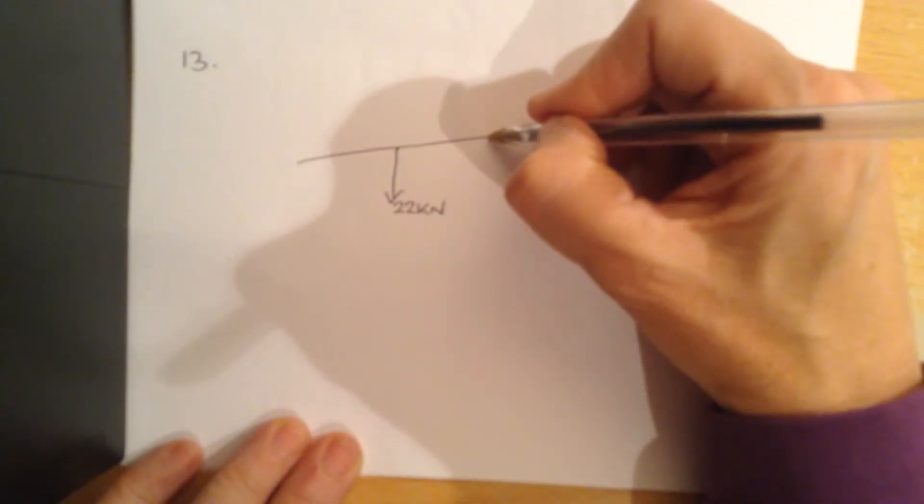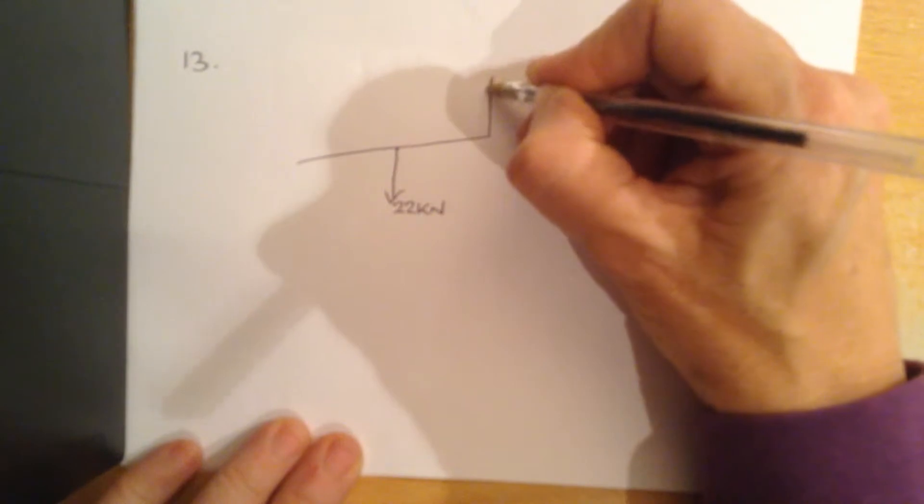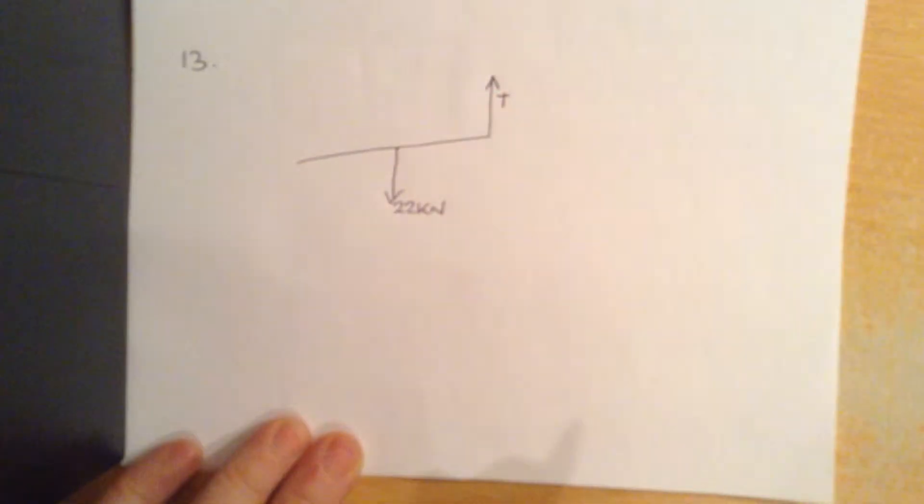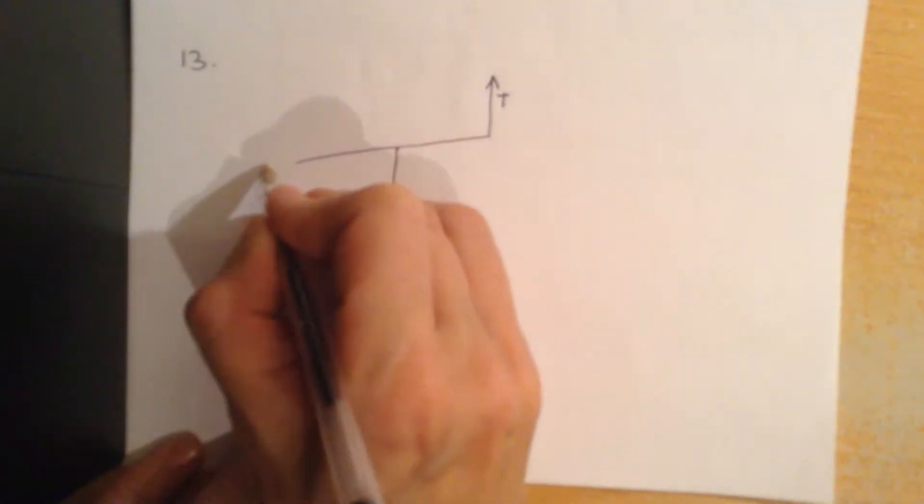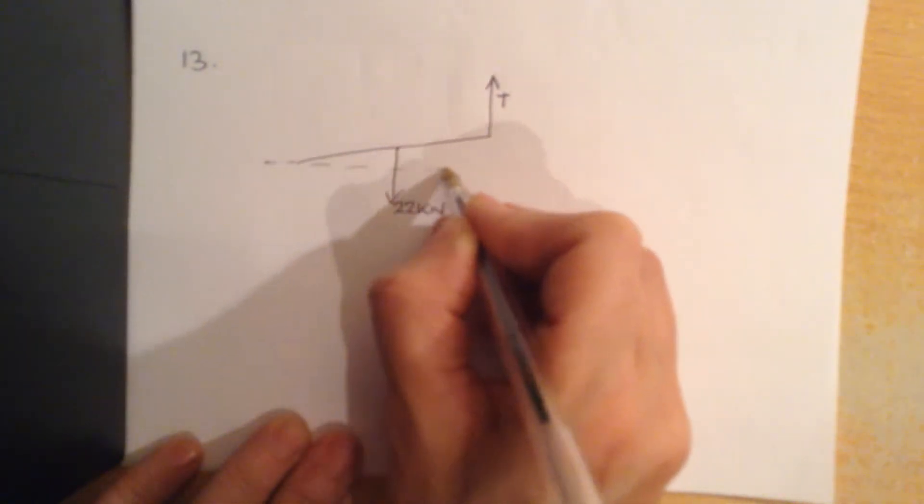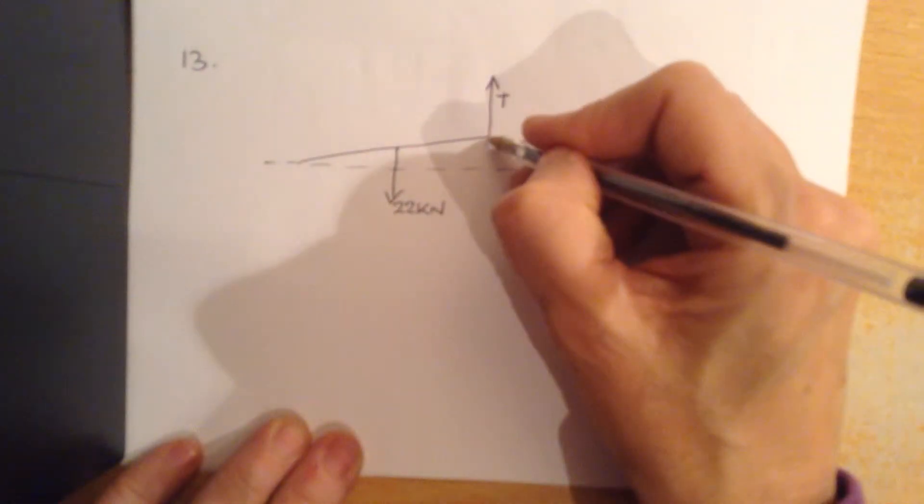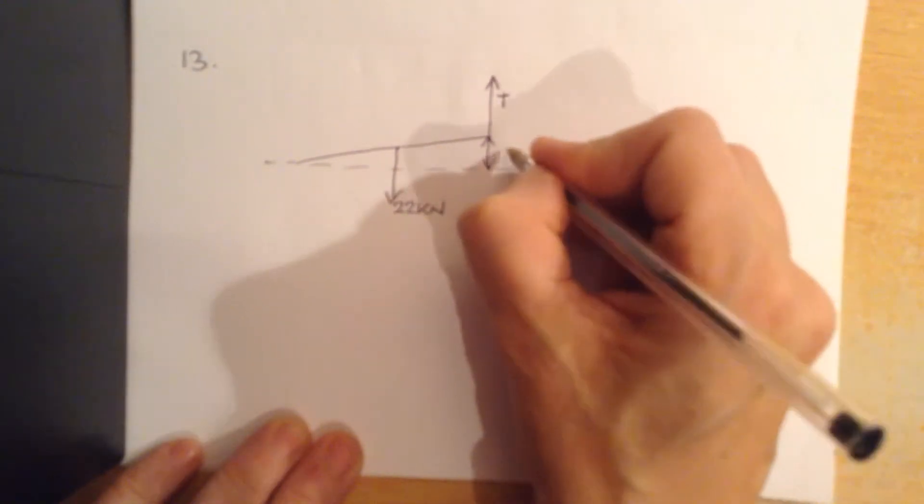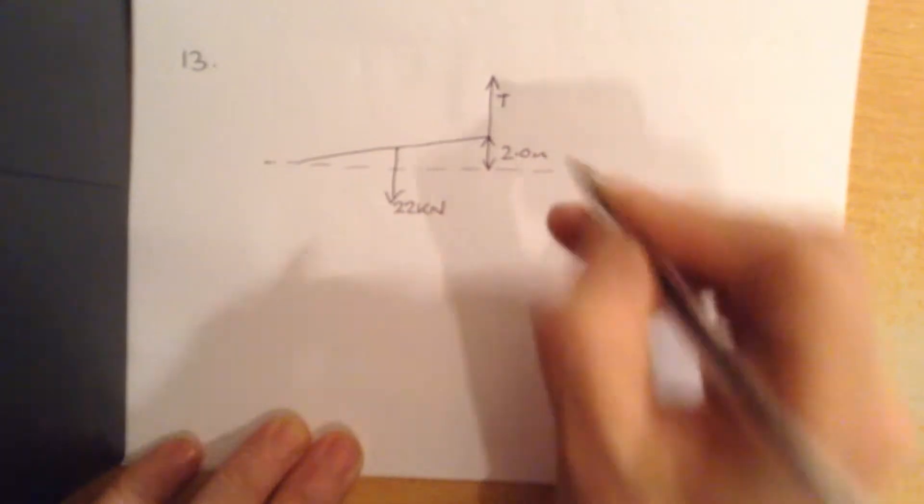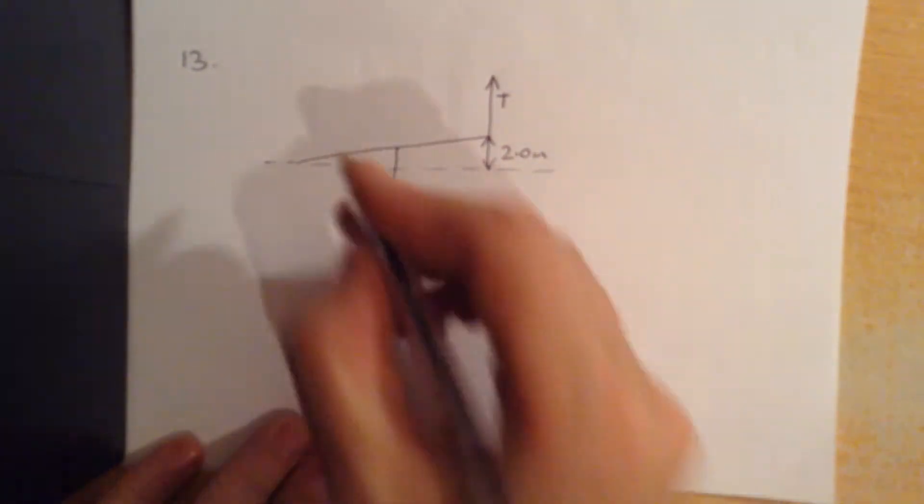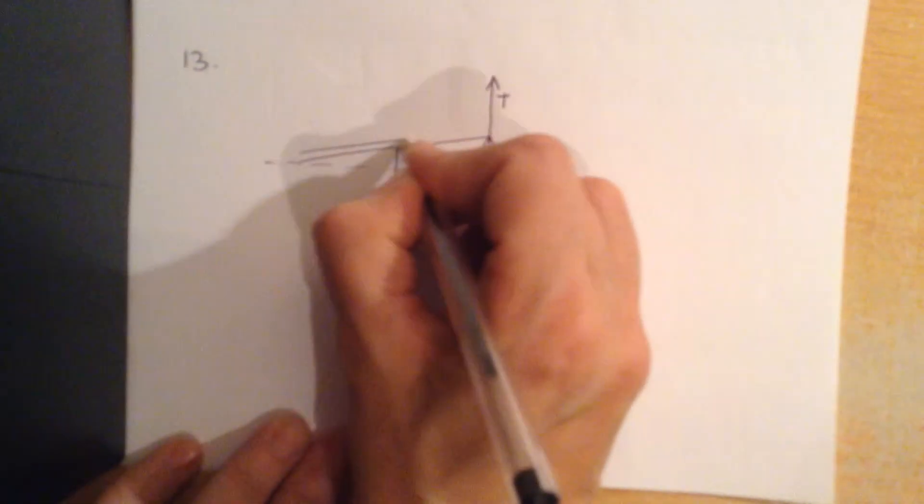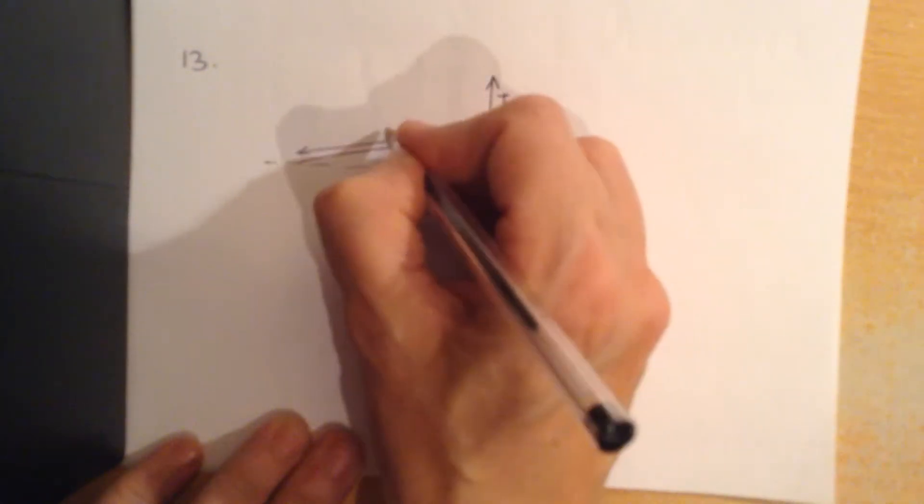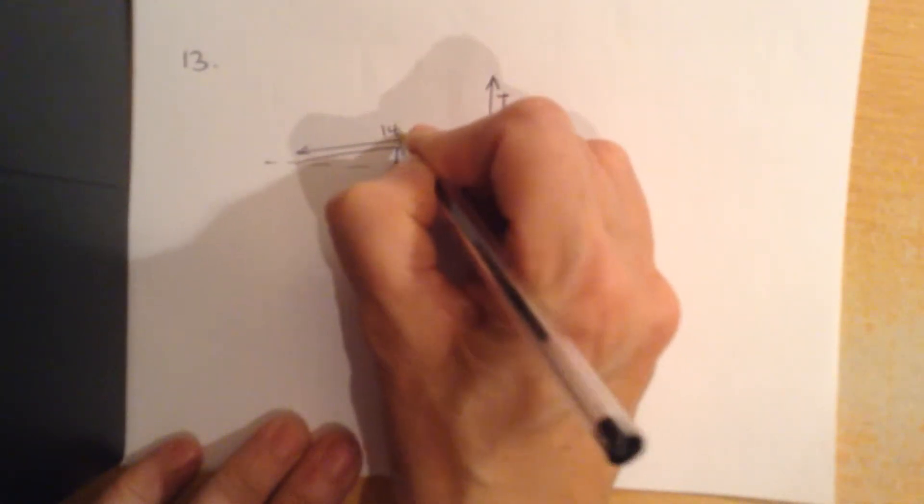It's being pulled vertically by a steel cable with a certain tension in it, such that it is two meters above ground. The length of the girder, from one side to the other, is 14 meters.